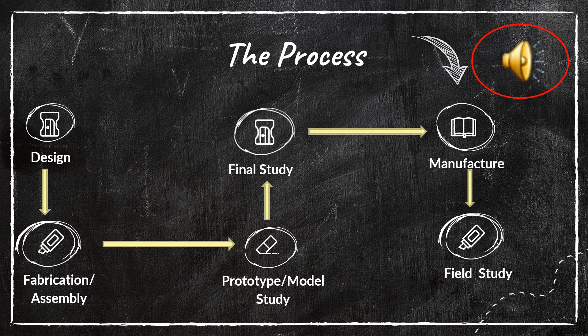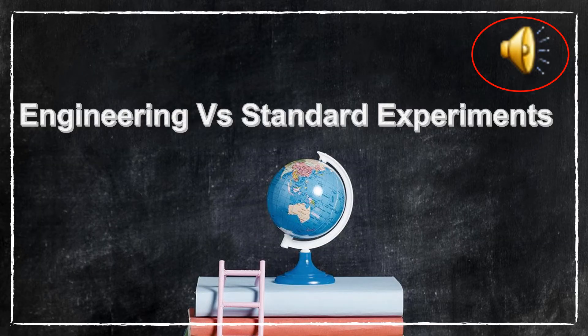Then comes the final study. After eliminating any potential risks or complications, we move to the final study, and after approval we move on to manufacturing of the product — the end product delivered to customers. Even after manufacturing, the process is not over yet. Once the product is out in the market, marketing experts conduct a field study to analyze how the product is being received so that necessary developments can be made in the next design or product. We shall now move on to the differences and similarities between engineering and standard experiments.